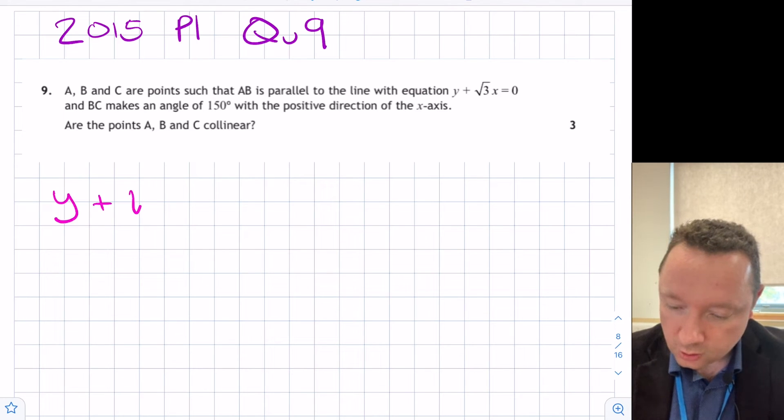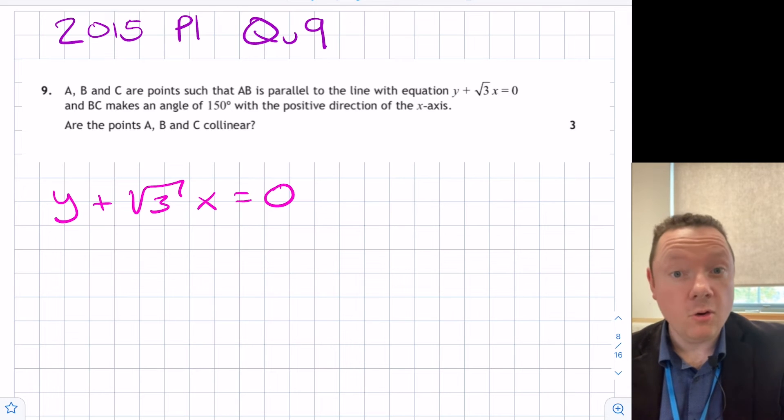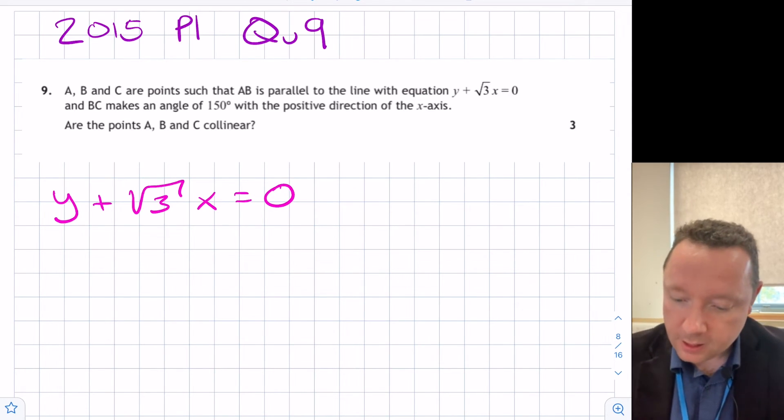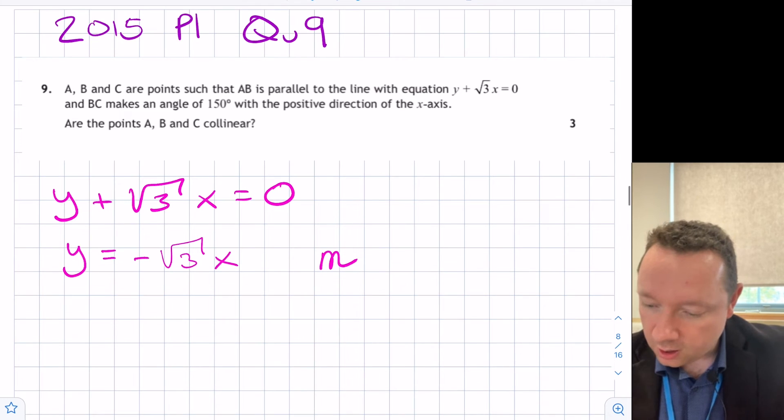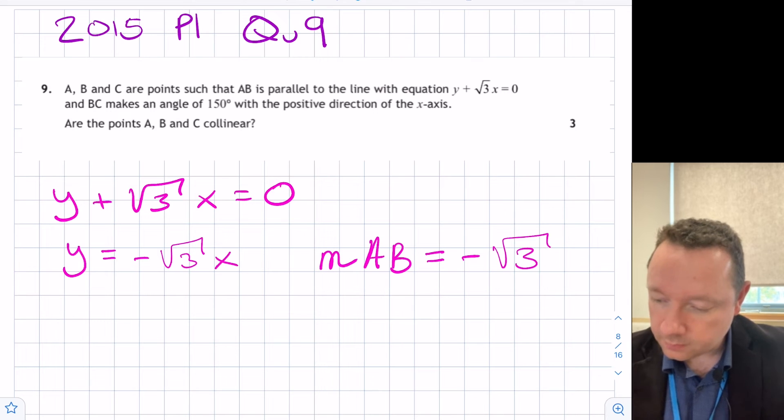So let's look at the first line. We've got y + √3x = 0. If they're collinear, the gradients of any bits will be the same. So rearranging this, y = -√3x. The gradient of this part, AB, is equal to -√3. We've done the first part. We know our first gradient.